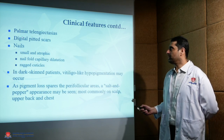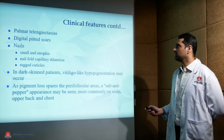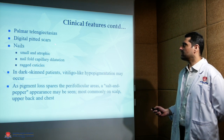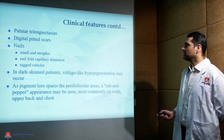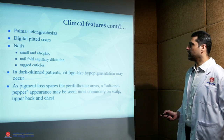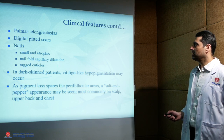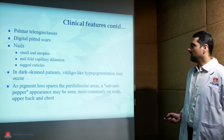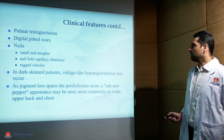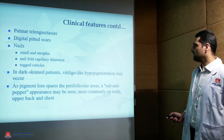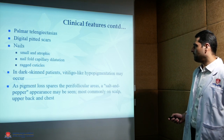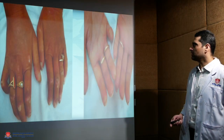There can be palmar telangiectasias, digital pitted scars, and nails may be small and atrophic. Nail fold capillary dilatation may be seen, and cuticles may be ragged. In dark-skinned patients, there could be vitiligo-like hypopigmentation in a salt and pepper fashion.